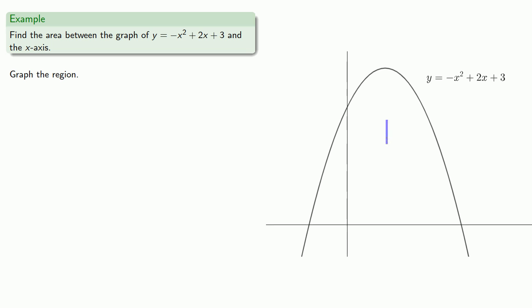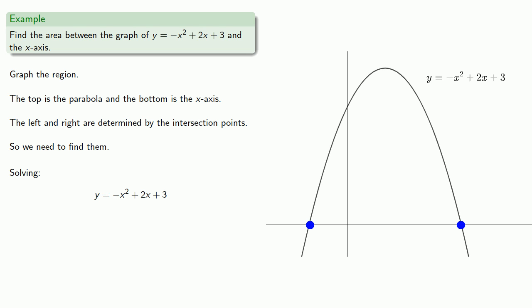Now the top is the parabola and the bottom is the x-axis. And there is a left and right side which are determined by the intersection points, so we need to find them. So these are going to be the x-intercepts and they'll occur when y is equal to 0. So we'll solve and we find, and if it's not written down it didn't happen, let's go ahead and label these points on our graph.